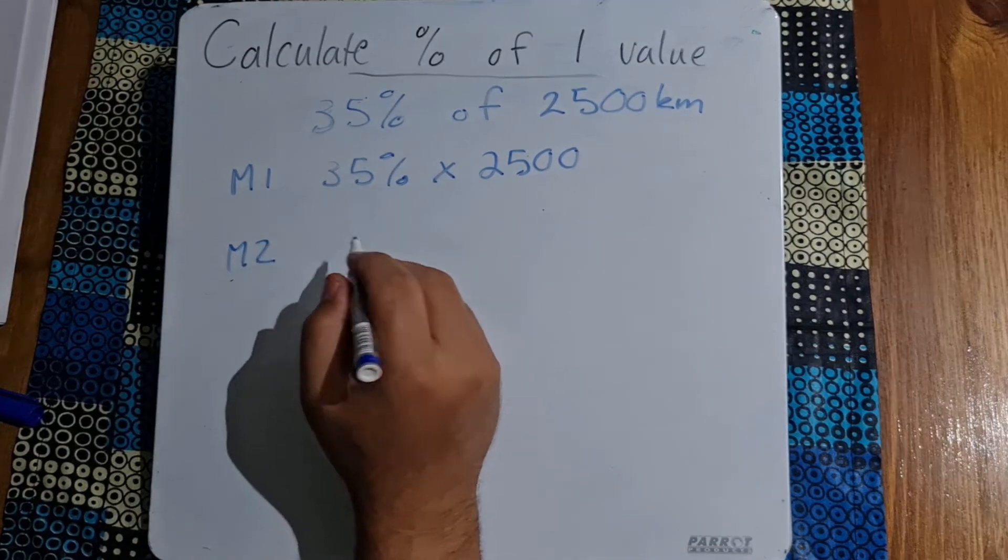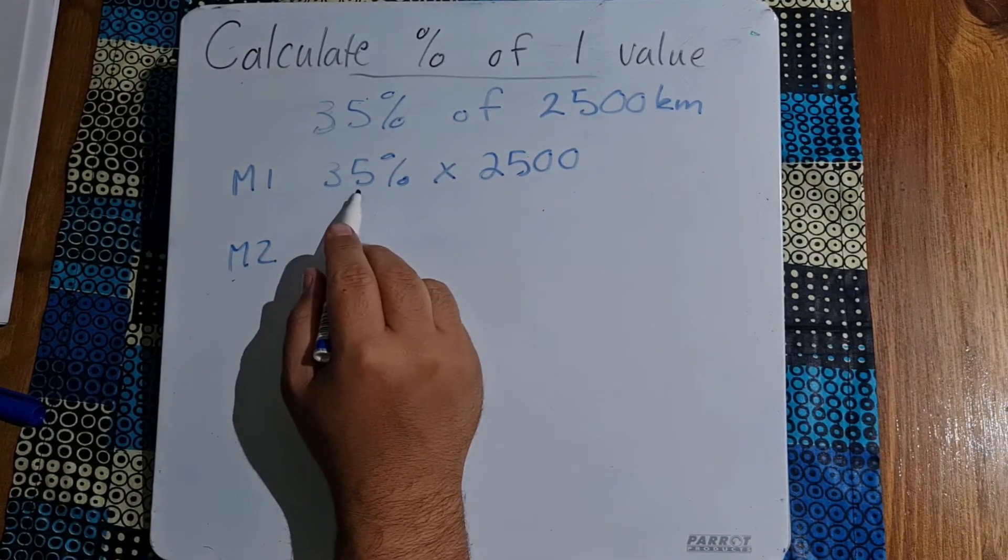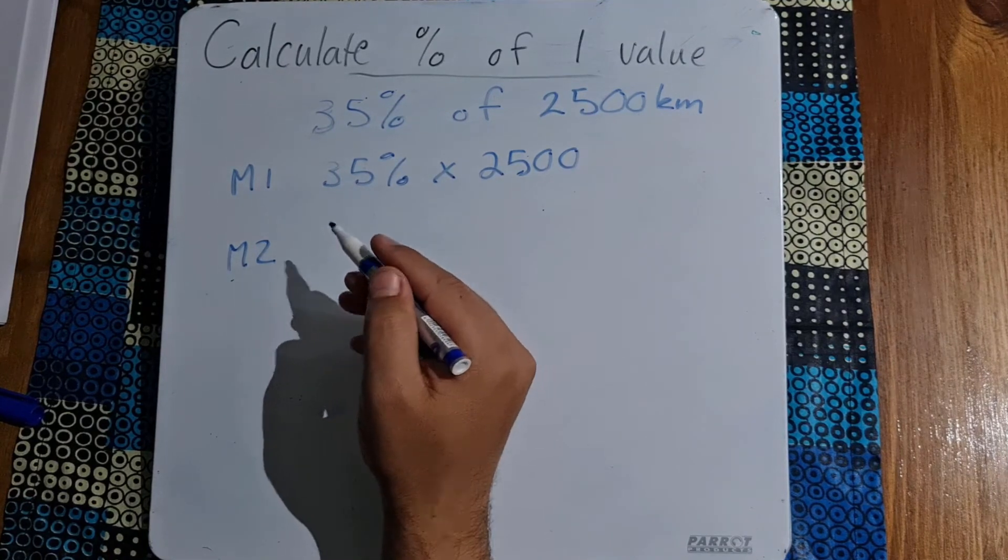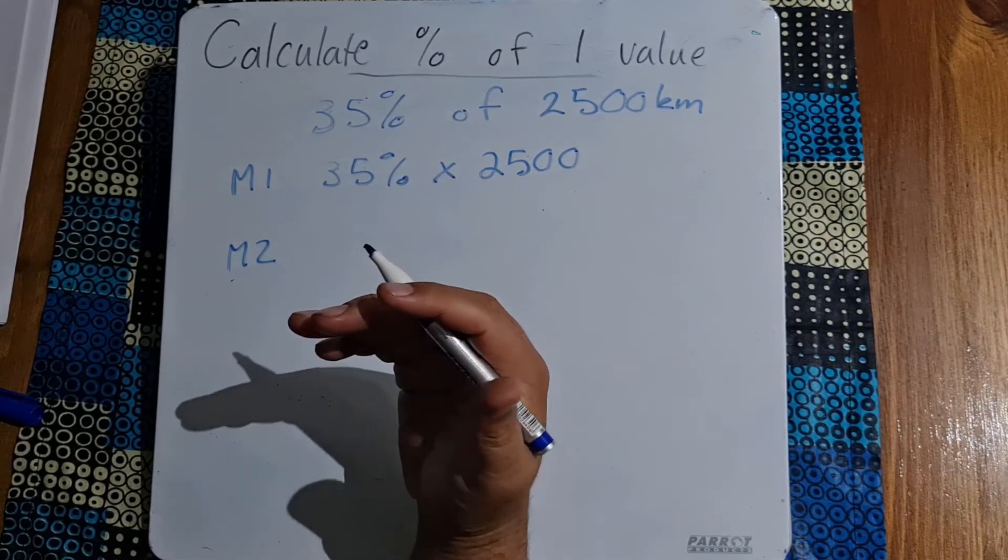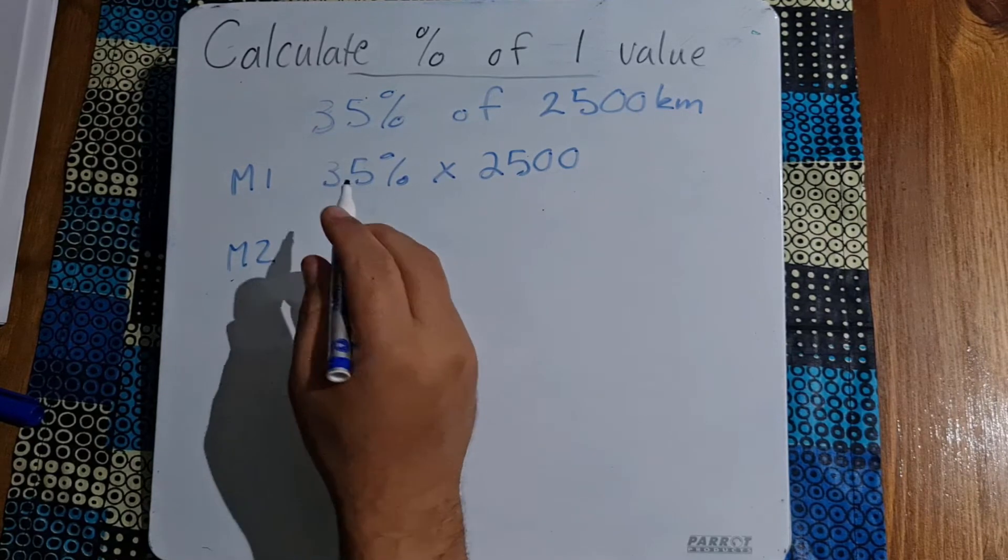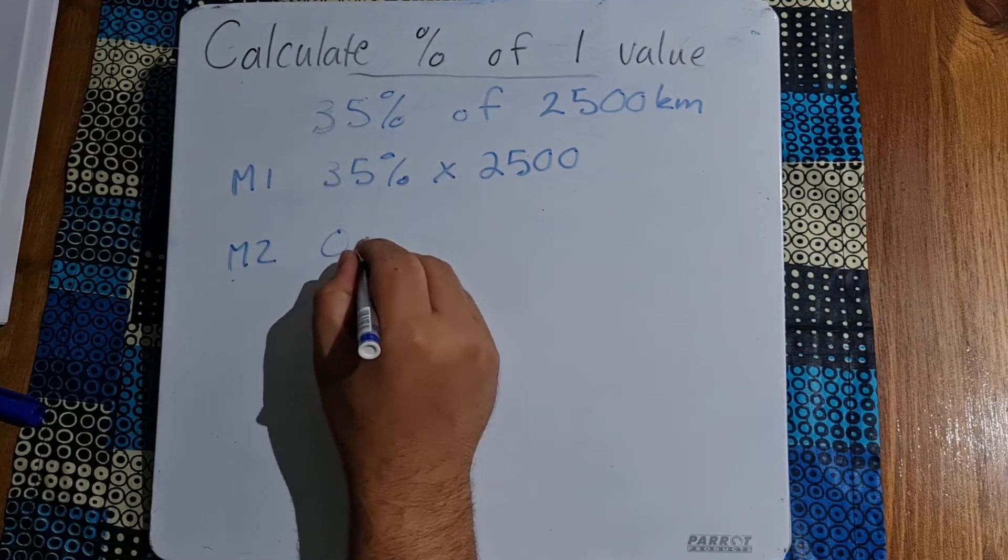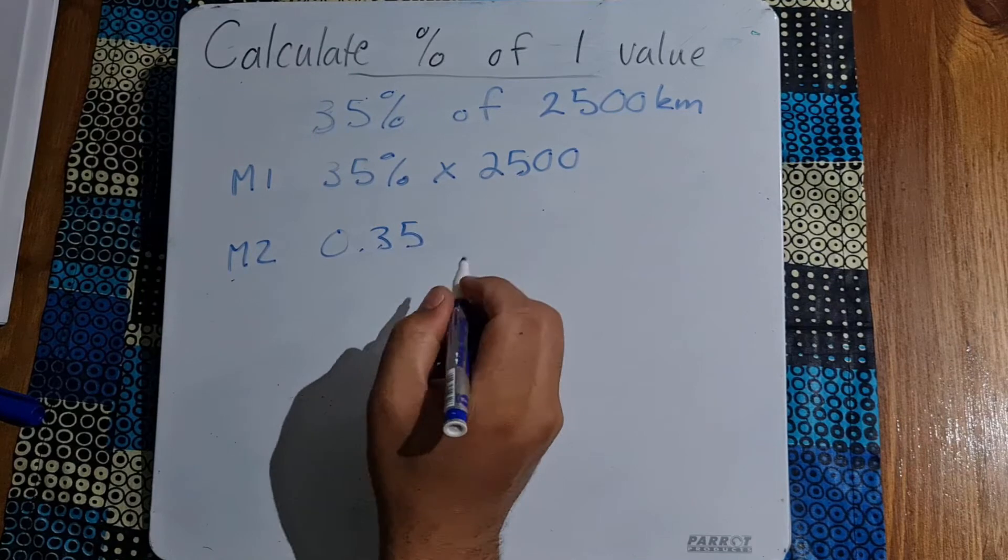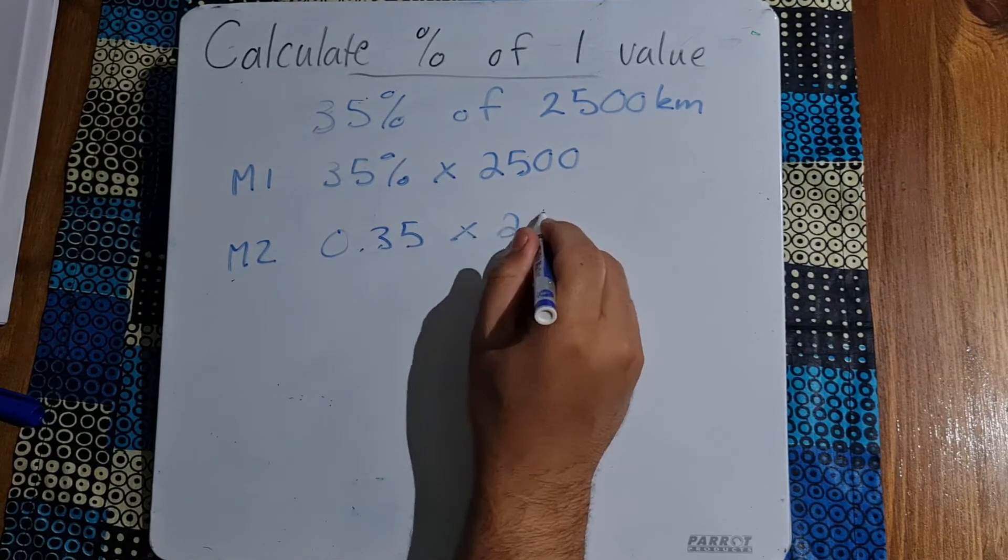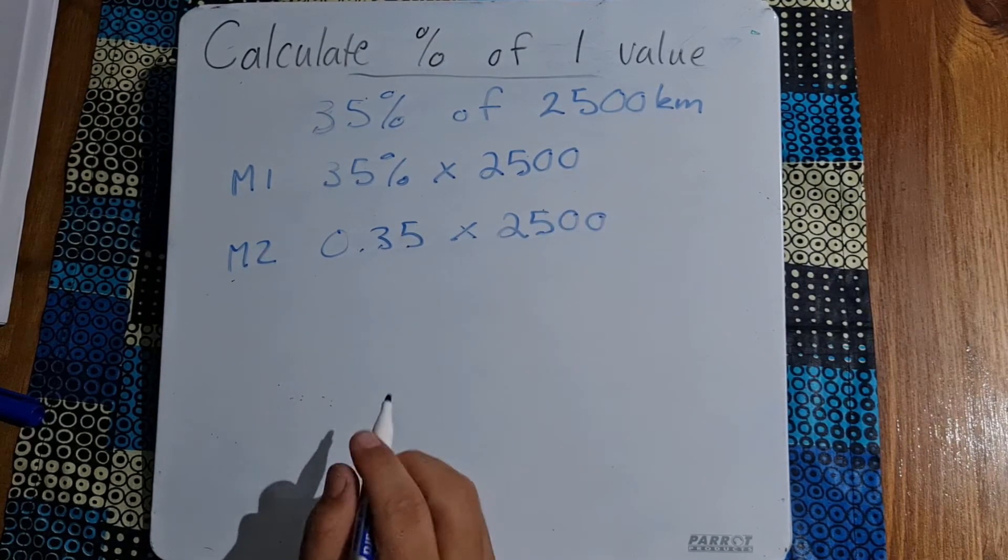The second way of doing it is to change this into a different format. Now remember this was something right at the beginning of Mathslet that we spoke about. 35 percent can also be expressed as 0.35 and again we're going to multiply that by 2500.